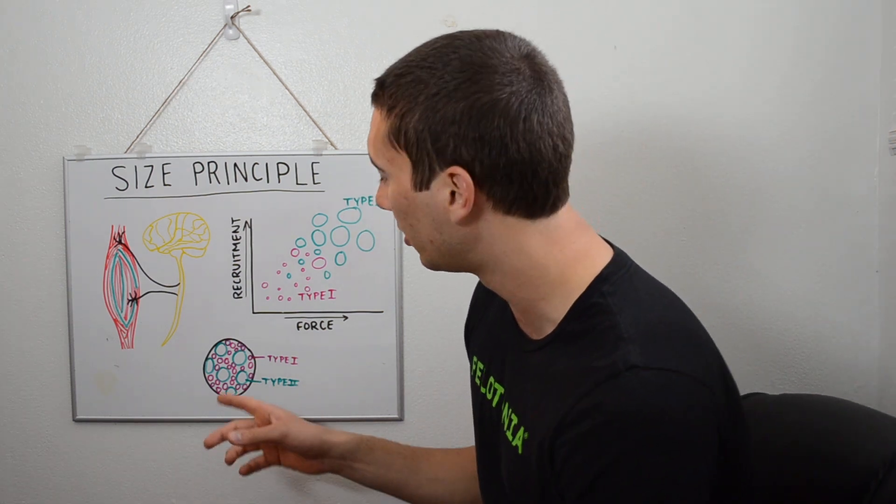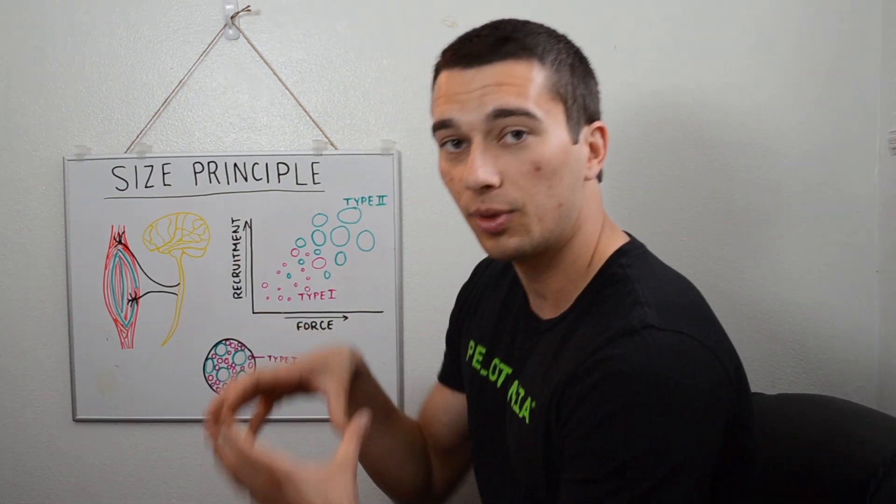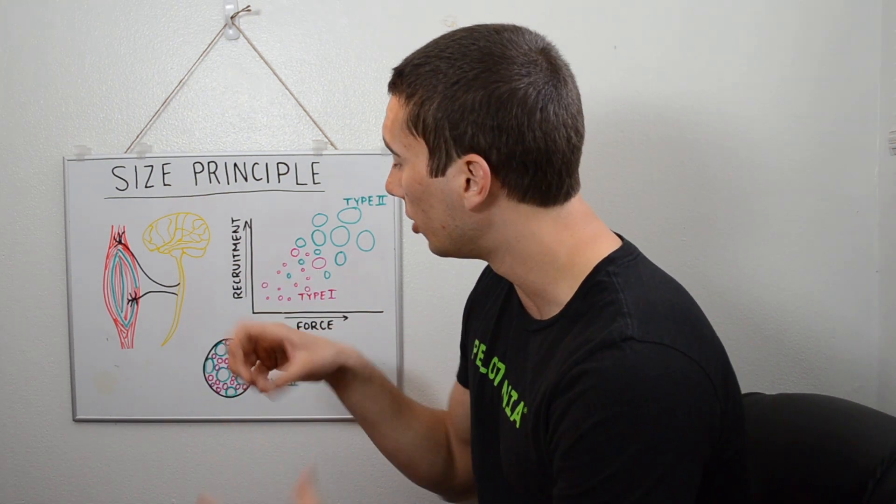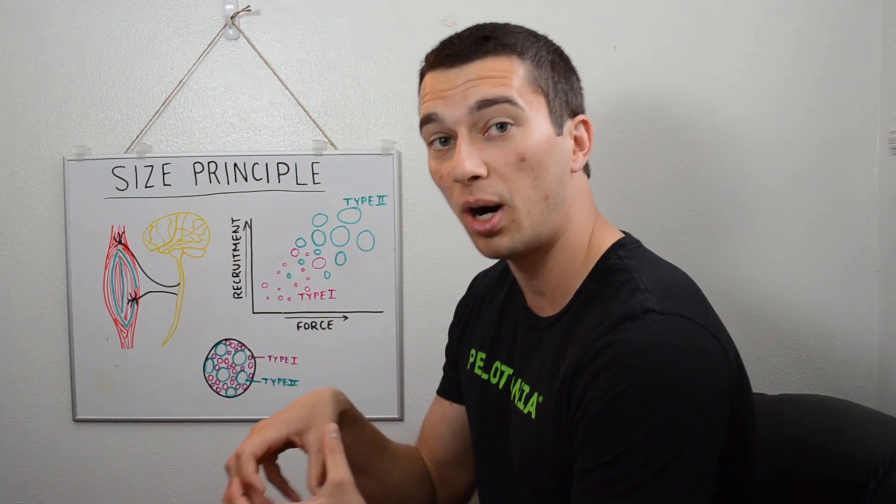Then we have type 2s in green, and we'll get a little bit more specific to type 2a and type 2x here in a second. But basically within that muscle we have small and then large motor units, which are just bundles of fibers.